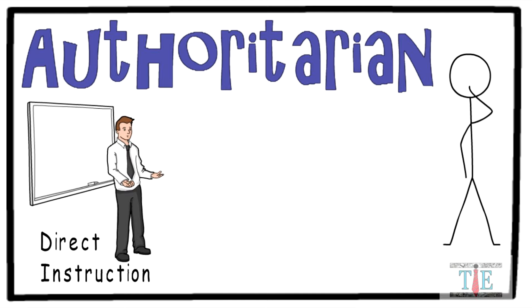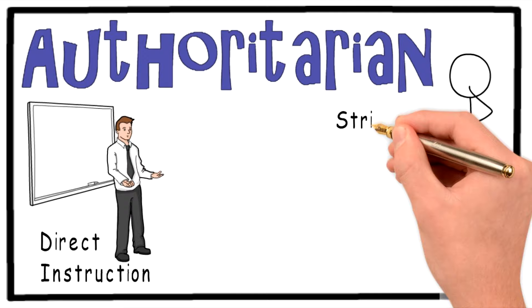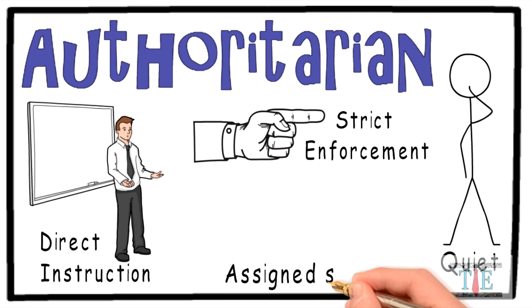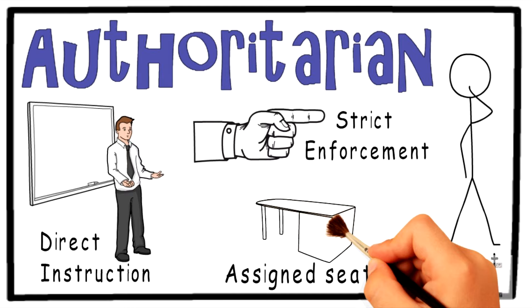The authoritarian style teacher does not want to take any questions from the students. Classroom rules are strictly enforced. The teacher is very firm and inflexible when it comes to the rules. Authoritarian teachers like to have their students sit in assigned seats for the entirety of the year. These teachers are very organized and like to see their students in one place.